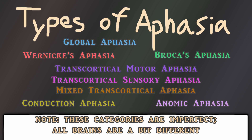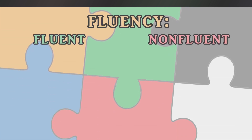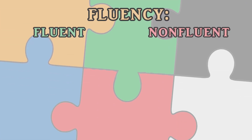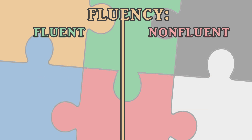Today, let's discuss the three types that are most well documented. A crucial distinction between the subtypes of aphasia is between fluent and non-fluent aphasias. Fluency is the flow of words, or how easy it is to speak a bunch of words in sequence.